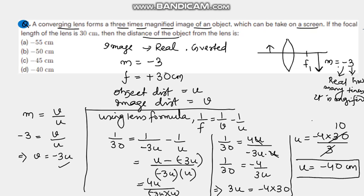So u is minus 40 centimeters. The object is situated at a distance of 40 centimeters from the optical centre. Just take a clear look at the question and you will understand what all is given. I hope I have made you understand this question clearly. Thanks for watching. Bye.